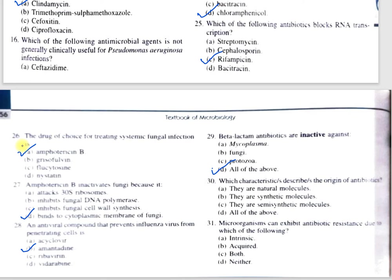Question number 30: Which characteristic describes the origin of antibiotics? A, they are natural molecules; B, they are synthetic molecules; C, they are semi-synthetic molecules; D, all of the above. The correct option is D — antibiotics can be natural, semi-synthetic, or synthetic. Question number 31: Microorganisms can acquire antibiotic resistance due to which of the following? A, intrinsic; B, acquired; C, both; D, neither. Resistance can be intrinsic or acquired, so the correct option is C, both.